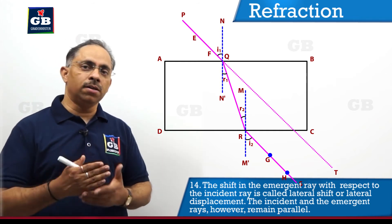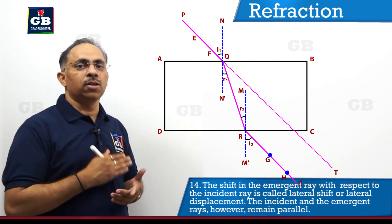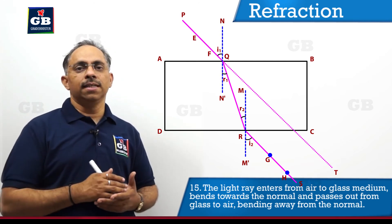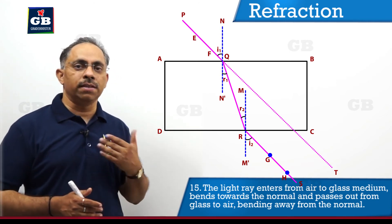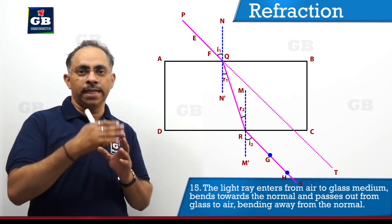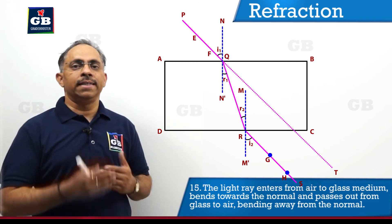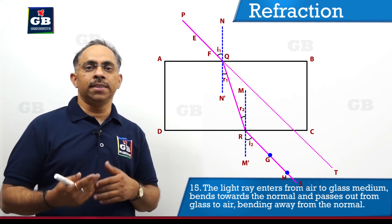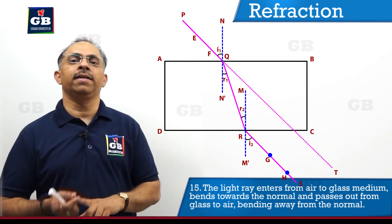To measure the lateral shift, we drop a normal from point R onto the line PQLT, where L is the foot of the perpendicular. The length RL represents the lateral shift of the light ray due to refraction through the glass slab. The light ray deviates toward the normal when entering the glass slab, and the angle of emergence is greater than the angle of incidence when exiting, because it goes from an optically denser to an optically rarer medium.